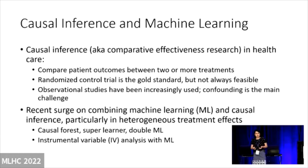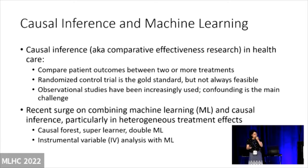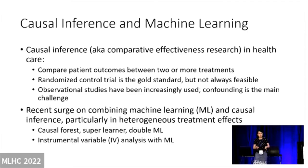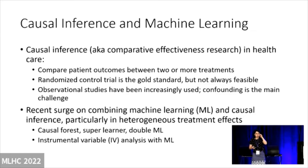Fast forward to the machine learning era. In the last 10 years there's also been a surge in machine learning, and the two fields have started to interact with each other. We see a lot of work combining machine learning and causal inference, particularly in estimating heterogeneous treatment effects. You hear about famous methods like causal forest, the super learner, double machine learning, and increasingly machine learning methods are being combined with the instrumental variable framework.